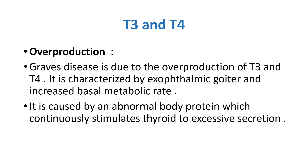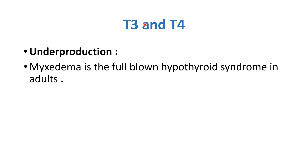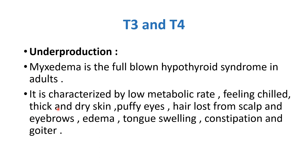The second anomaly is underproduction. Myxedema is a full-blown hypothyroid syndrome in adults. It is characterized by low metabolic rate, feeling chilled, thick and dry skin, puffy eyes, hair loss from the scalp and eyebrows, edema, and tongue swelling.